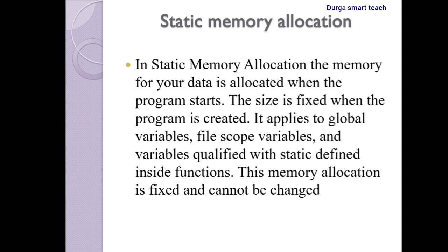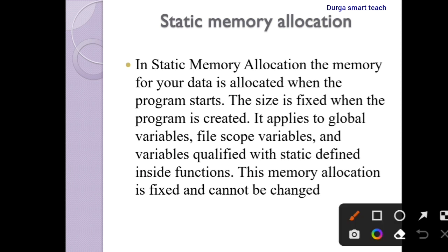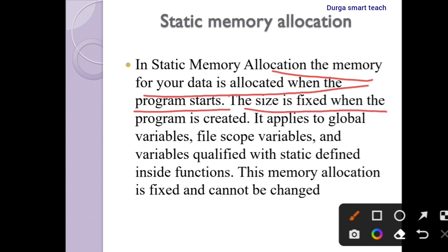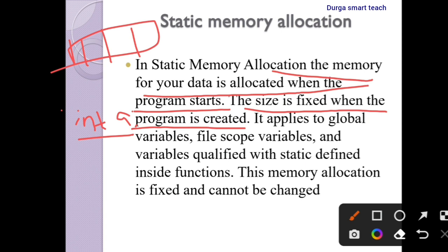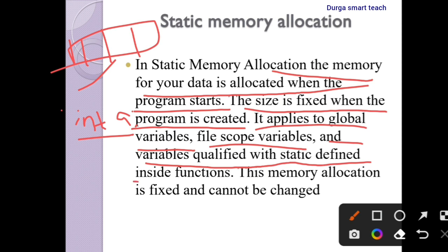In static memory allocation, memory for the data is allocated when the program starts — when compilation begins, memory is allocated for the data. The size is fixed when the program is created. For example, for an integer variable like `int a`, it allocates four bytes of memory. This size is fixed and applies to global variables, file scope variables, and variables qualified with static defined inside a function.